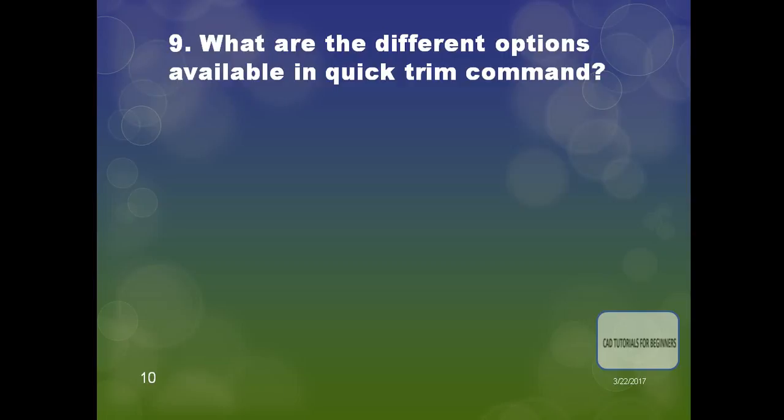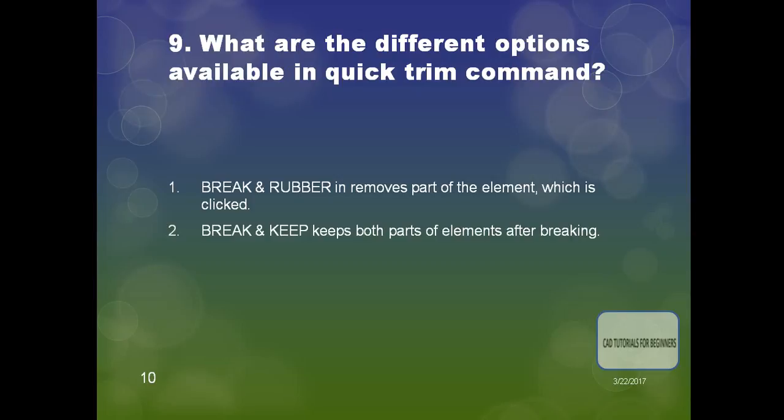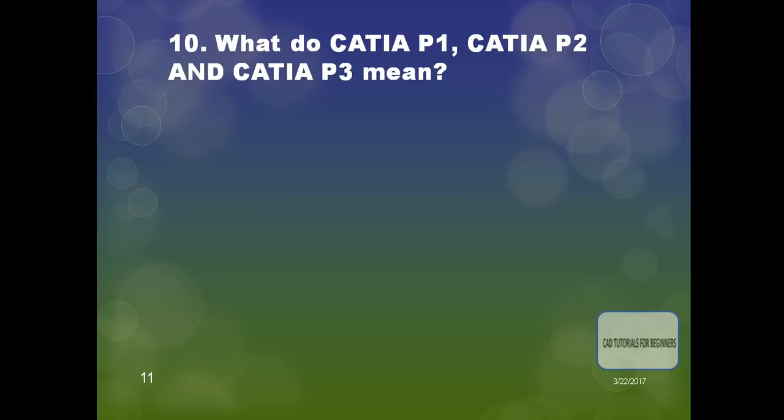The next question is: what are the different options available in the quick trim command? There are three options: 'Break and Rubber' removes the part of the element which is clicked; 'Break and Keep' keeps both parts of the element after breaking; and the third option removes the part of the element which is not clicked.